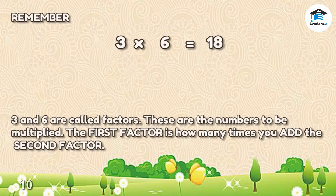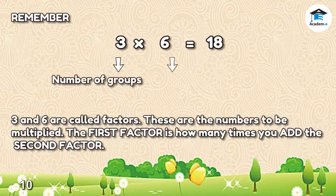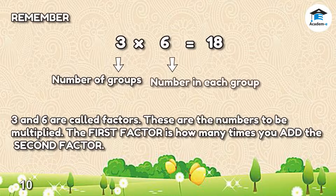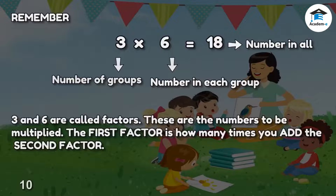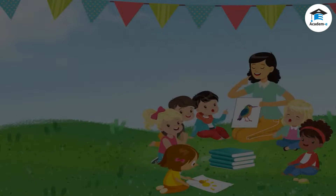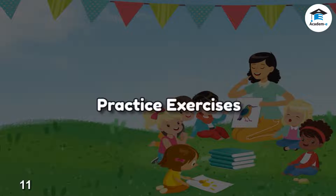Always remember, 3 and 6 are called factors — these are the numbers to be multiplied. The first factor is how many times you add the second factor. Practice exercises: get your pencil and paper and try this on your own.